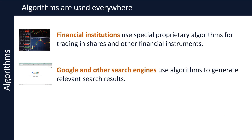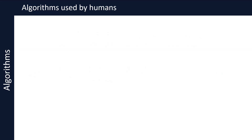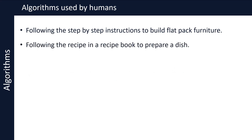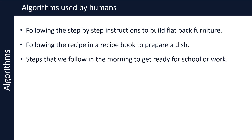As you can see, algorithms are used everywhere. Now, to explain what algorithms are, let's take a step back from computers and look at algorithms that we use in our daily life. A few examples of algorithms used by us humans are: following step-by-step instructions to build flat-pack furniture, following a recipe in a recipe book to prepare a dish, or the steps that we follow in the morning to get ready for school or work.